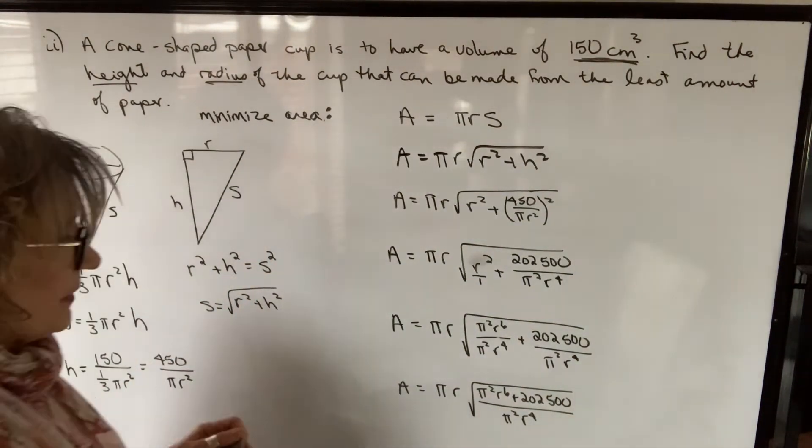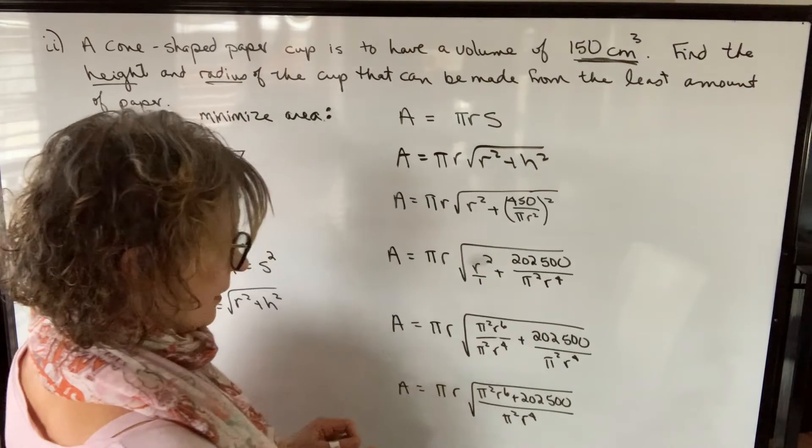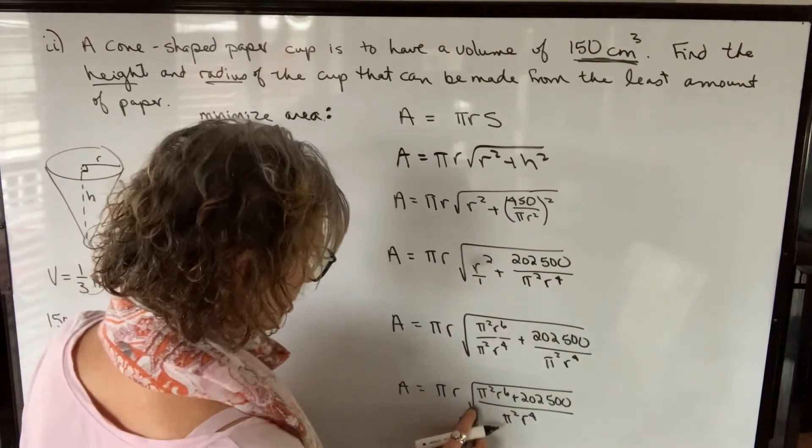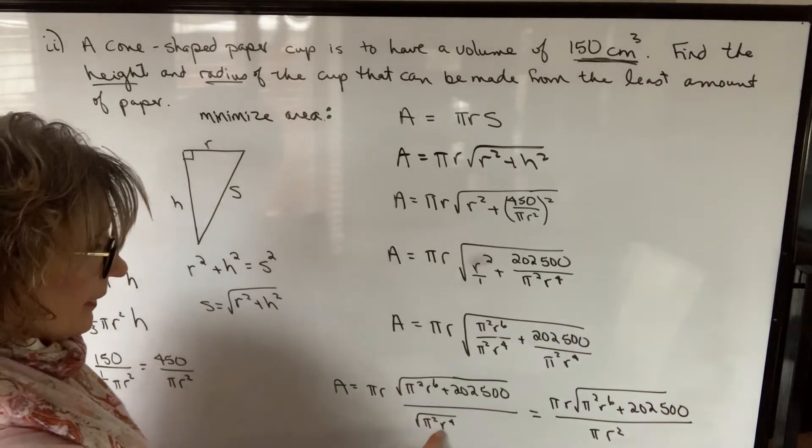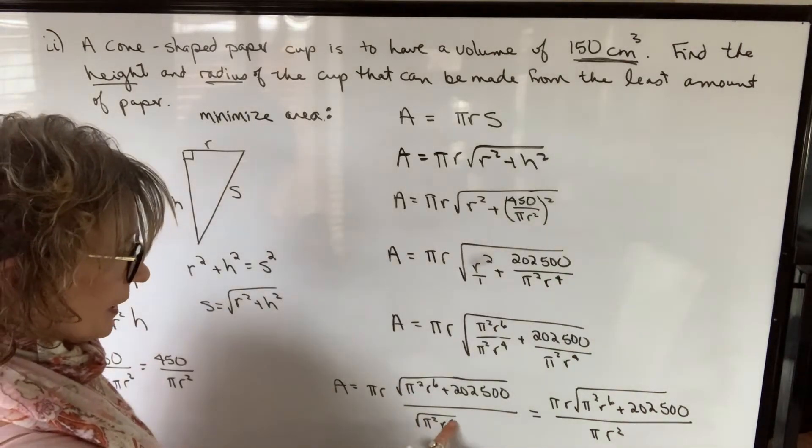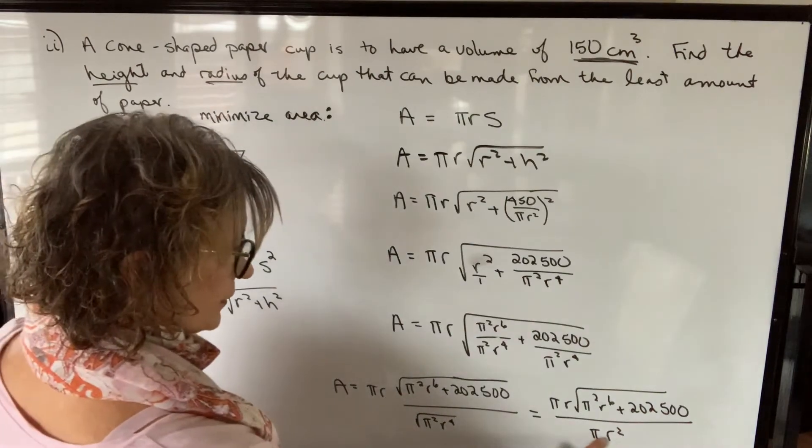My next step is to take the square root of each numerator and denominator. When I take the square root of the numerator and the denominator, I can then take the square root of each of these factors and just get pi over r squared.